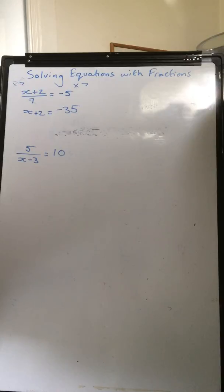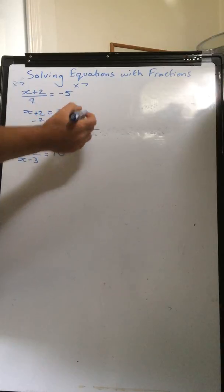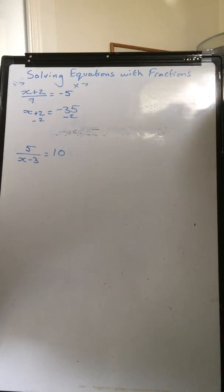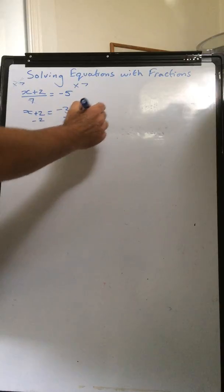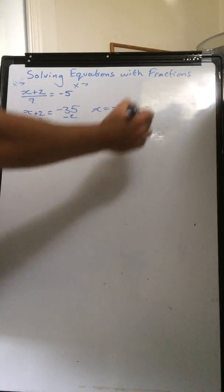Perfect. Now what we do, we just need to get x on its own, so we minus 2 on both sides. By doing that, that's going to give us x equals negative 37. Wonderful.